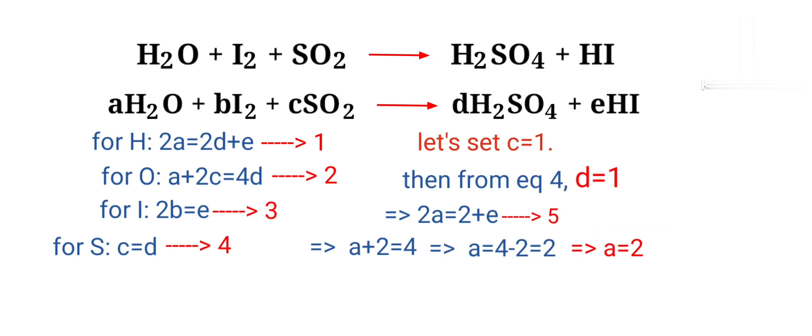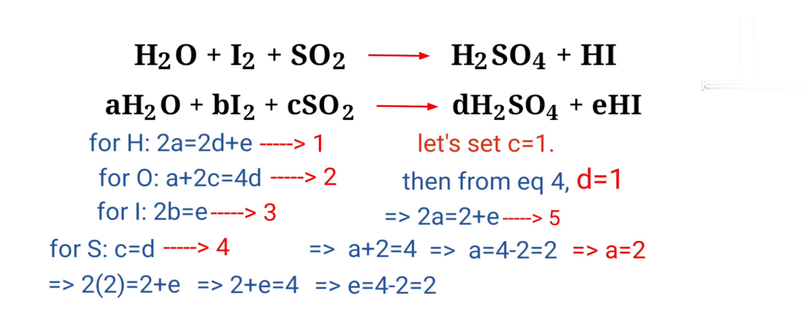Now apply the A value in equation 5. Then 2 times 2 equals 2 plus E. So 2 plus E equals 4. So E equals 4 minus 2, that equals 2. Therefore E equals 2.